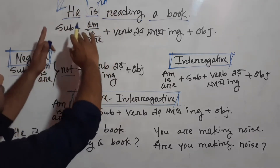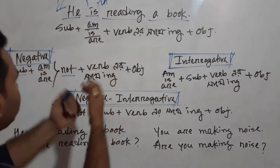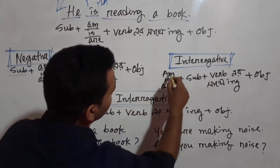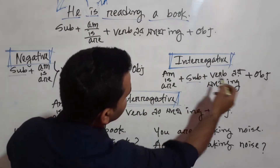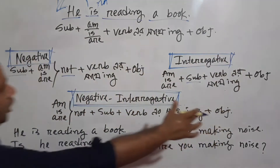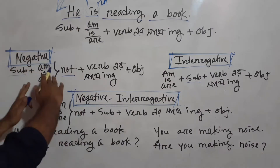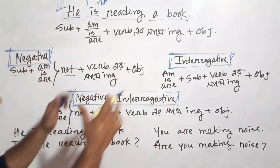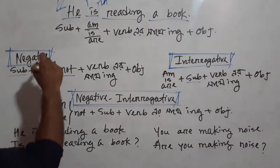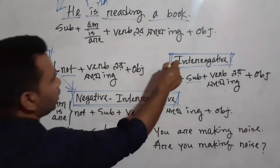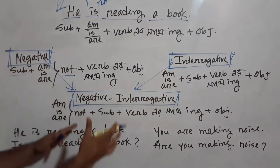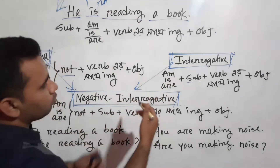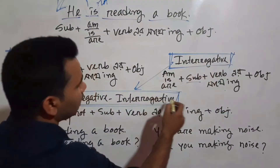Now we look at the interrogative sentence. The interrogative sentence has the structure: Auxiliary + Subject + Verb+ING + Object. We call this the interrogative sentence.